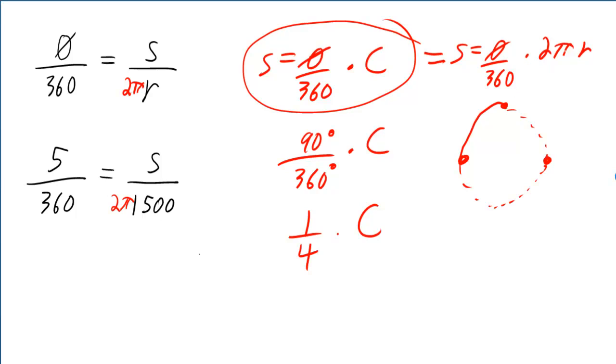Okay, so let's plug in to this version since we have the radius, and we'll be able to find the circumference at the same time. So we'll just plug in s equals 5 over 360 times 2 pi times 1,500.